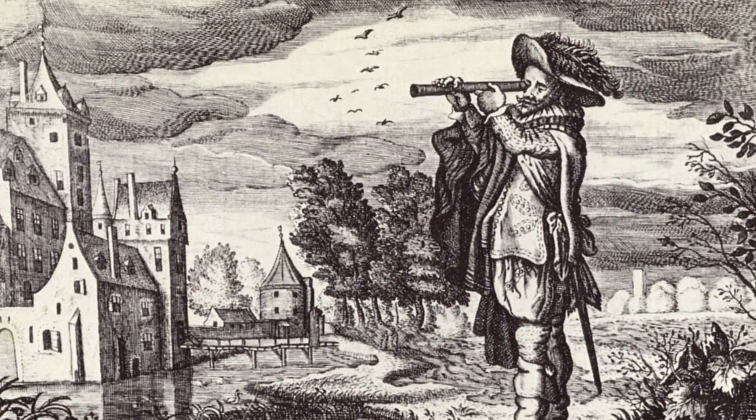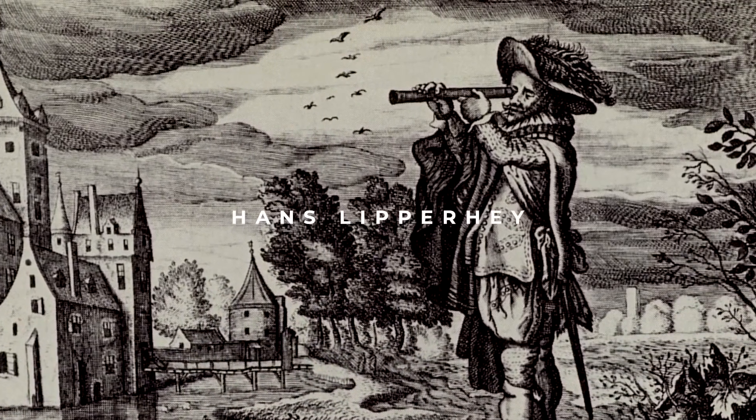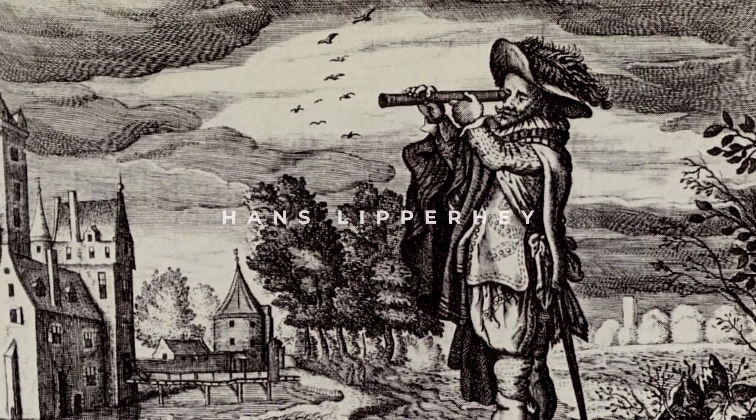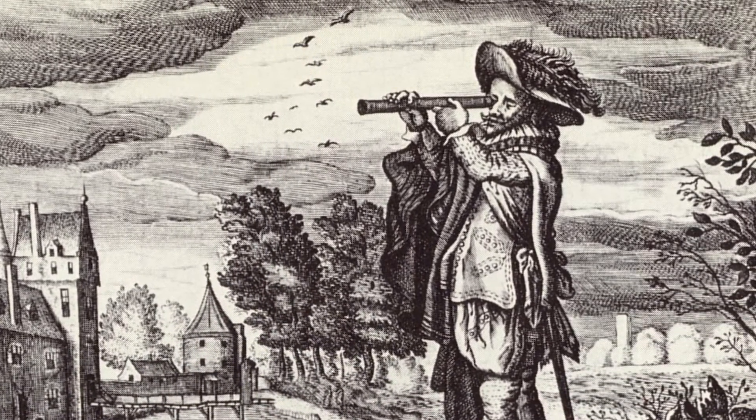It was discovered by a Dutch spectacle maker, Hans Lipperhey. After several months of research, Galileo created his own version of the telescope, which was far more advanced than the original Dutch invention.